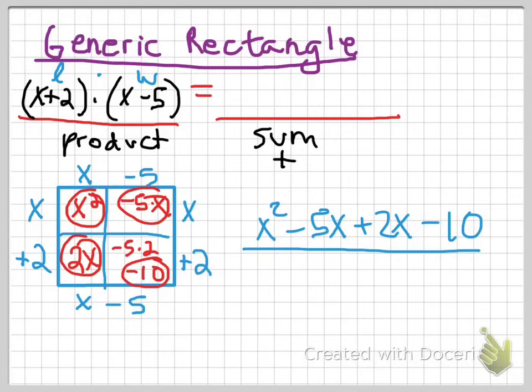but I do see something I could combine. I can put x's together. If I have negative 5x and 2x, negative 5 plus 2 is really negative 3x. So I'm going to write my final answer like this. I have an x squared, and then I have minus 3x because I put them together, and then I have that minus 10. And I got my answer.